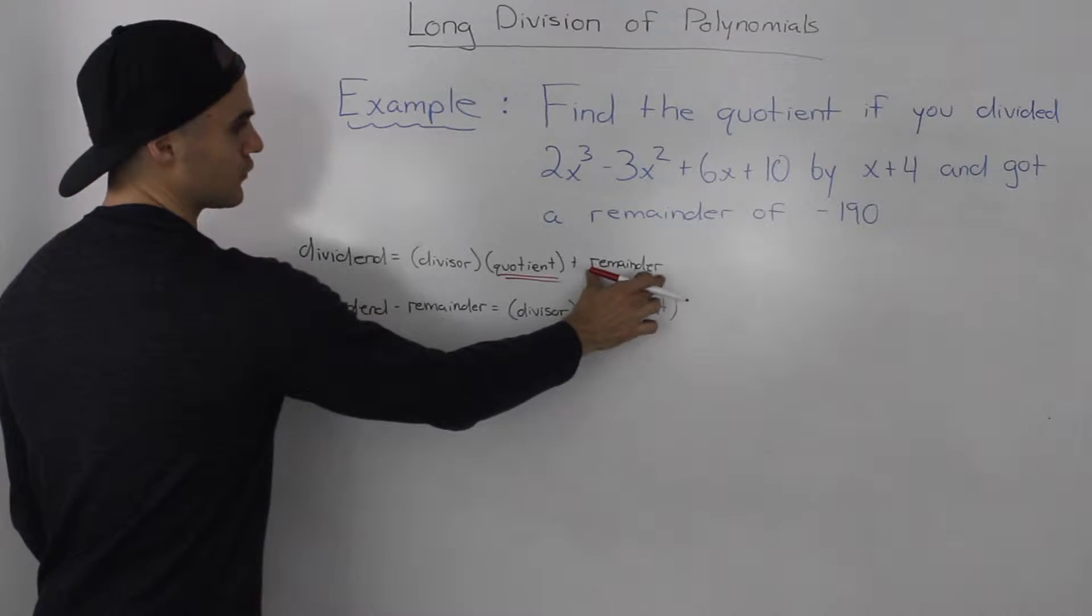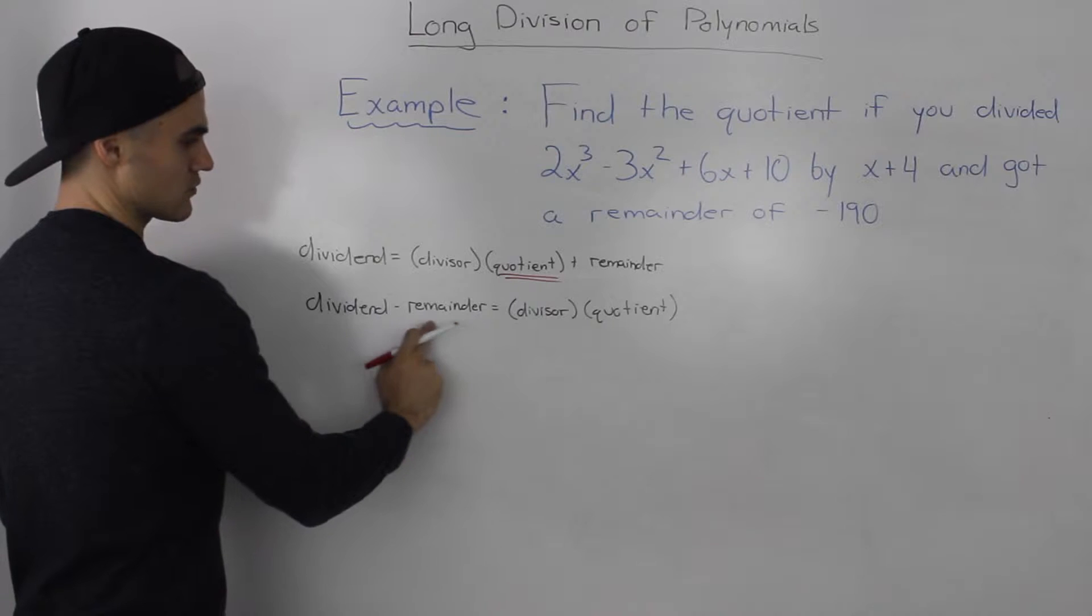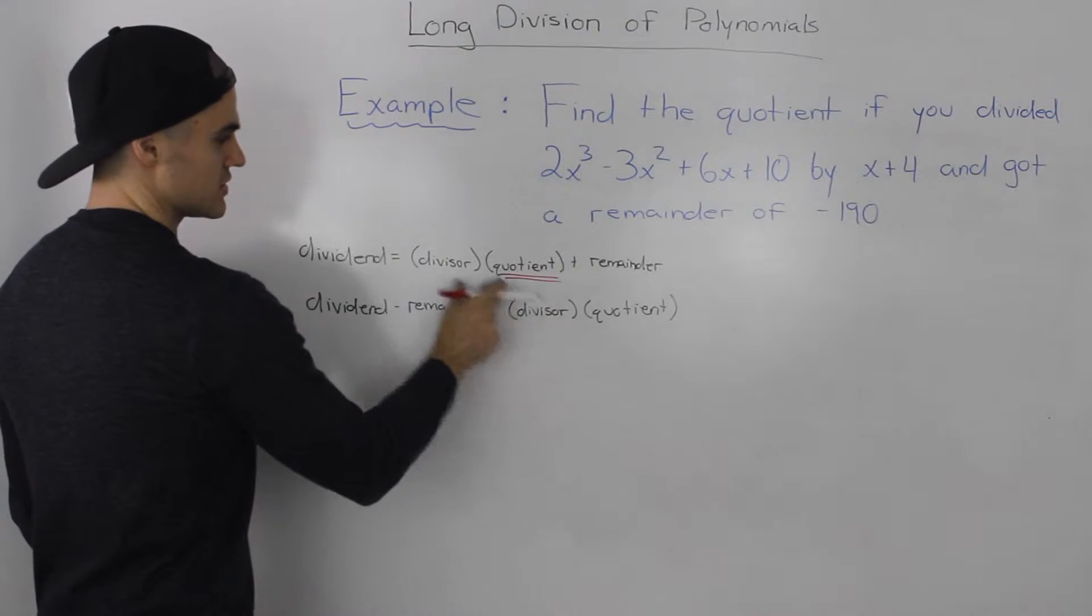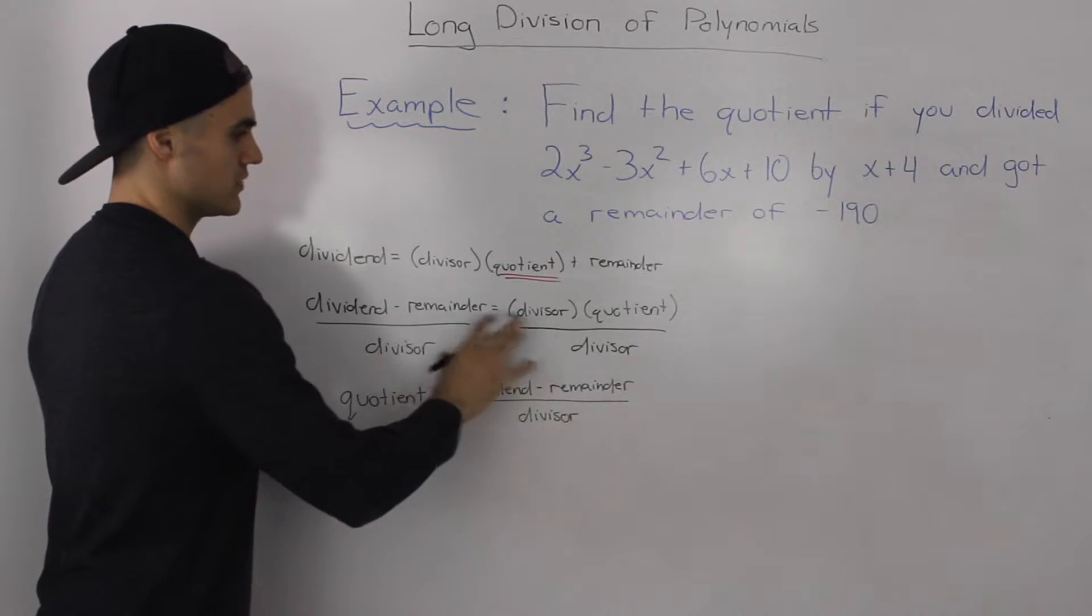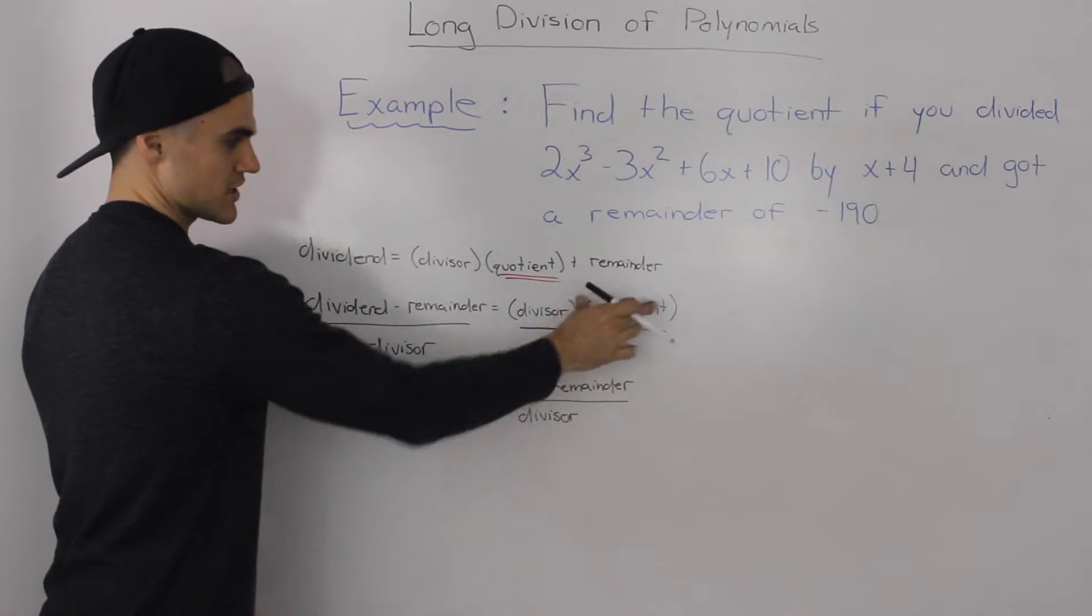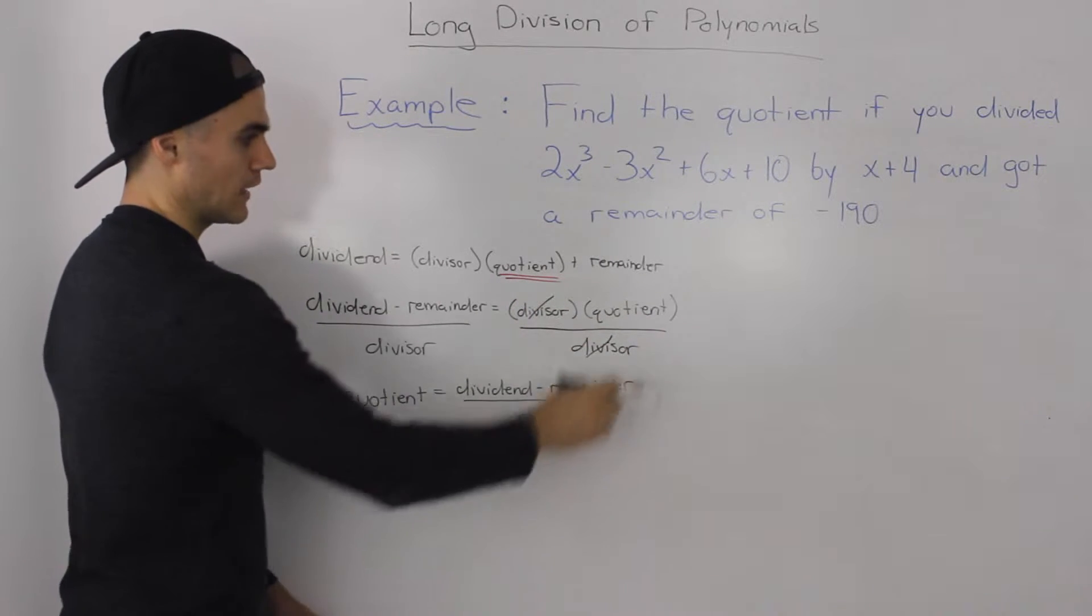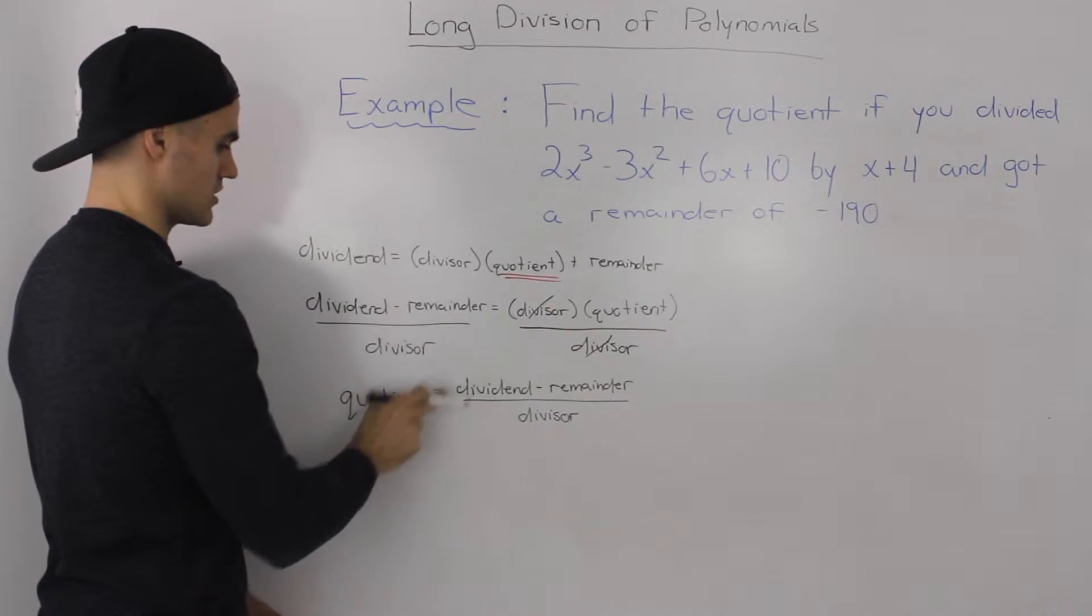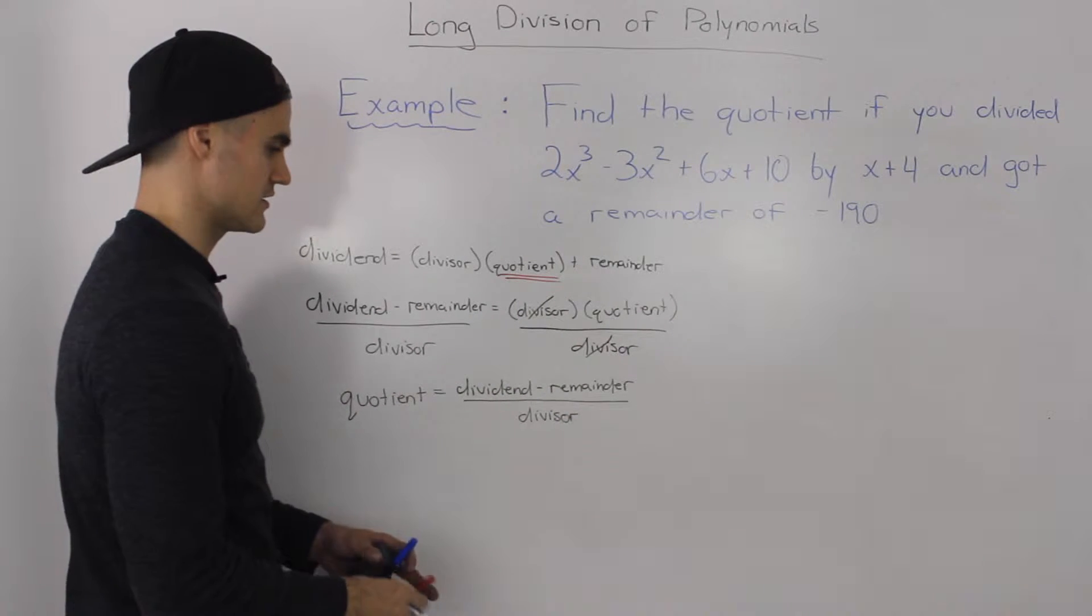We would first have to bring the remainder over so we'd have the dividend minus the remainder equals the divisor times the quotient. Then we would divide both sides by the divisor to get the quotient by itself, and we'd end up having the quotient is equal to the dividend minus the remainder over the divisor.